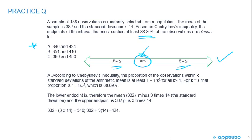the X plus 3 standard deviations and the X minus 3 standard deviations was the 89%. And that's what they're asking here, the endpoints of the interval that contain at least 89% of the observations. So we know we're talking about 3 standard deviations, and they gave us the standard deviation is 14. So it's going to be 3 times 14.